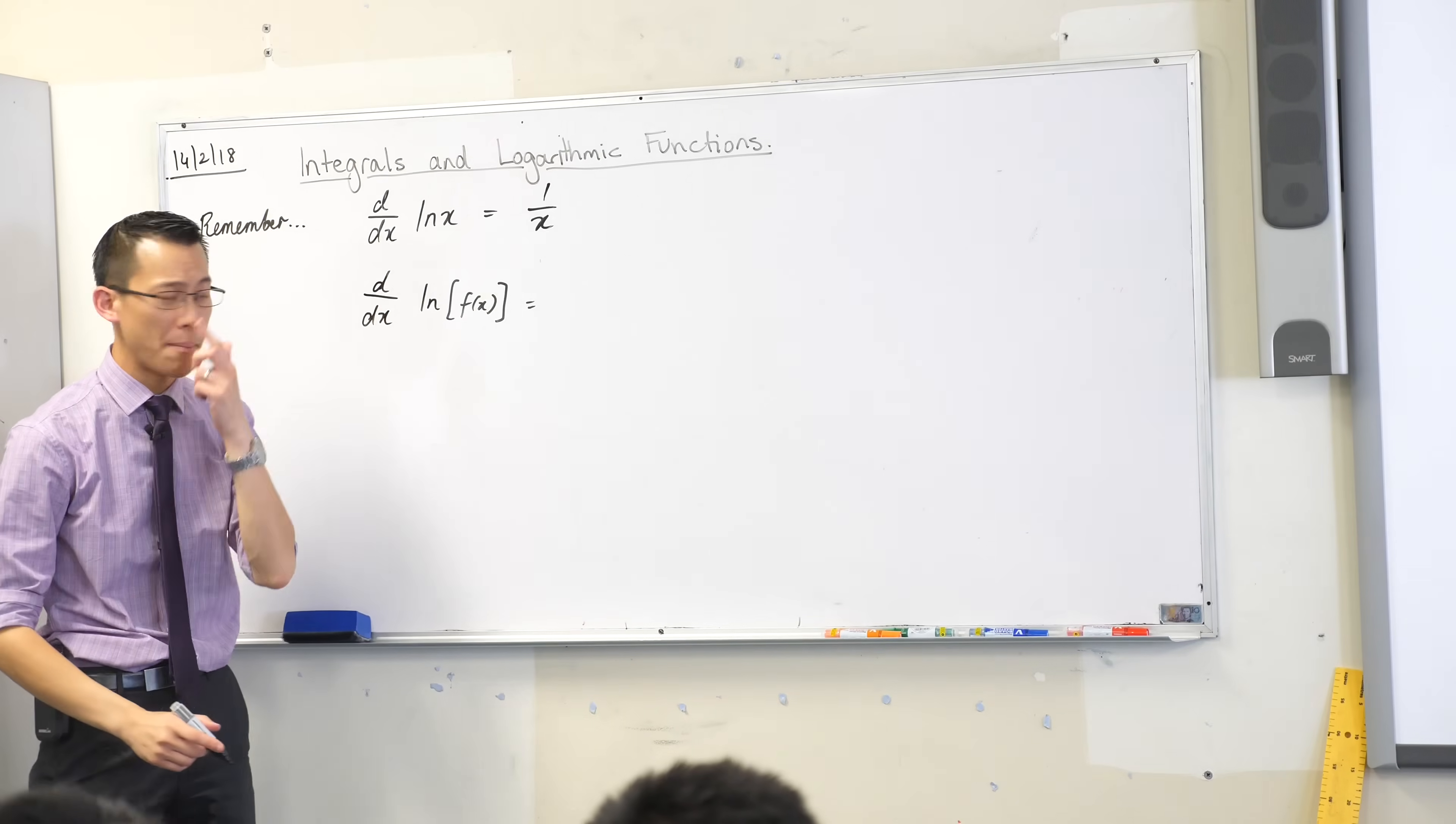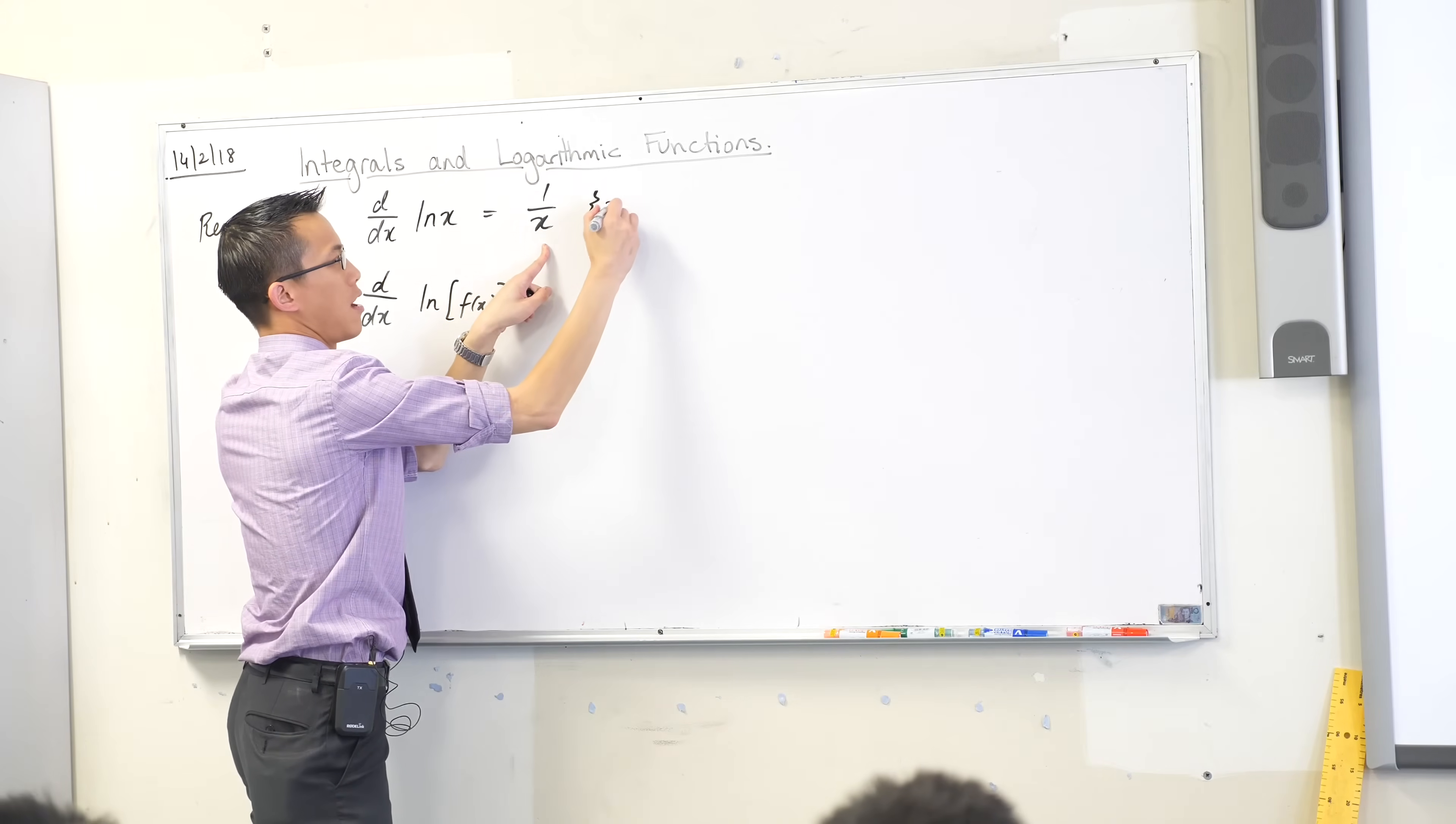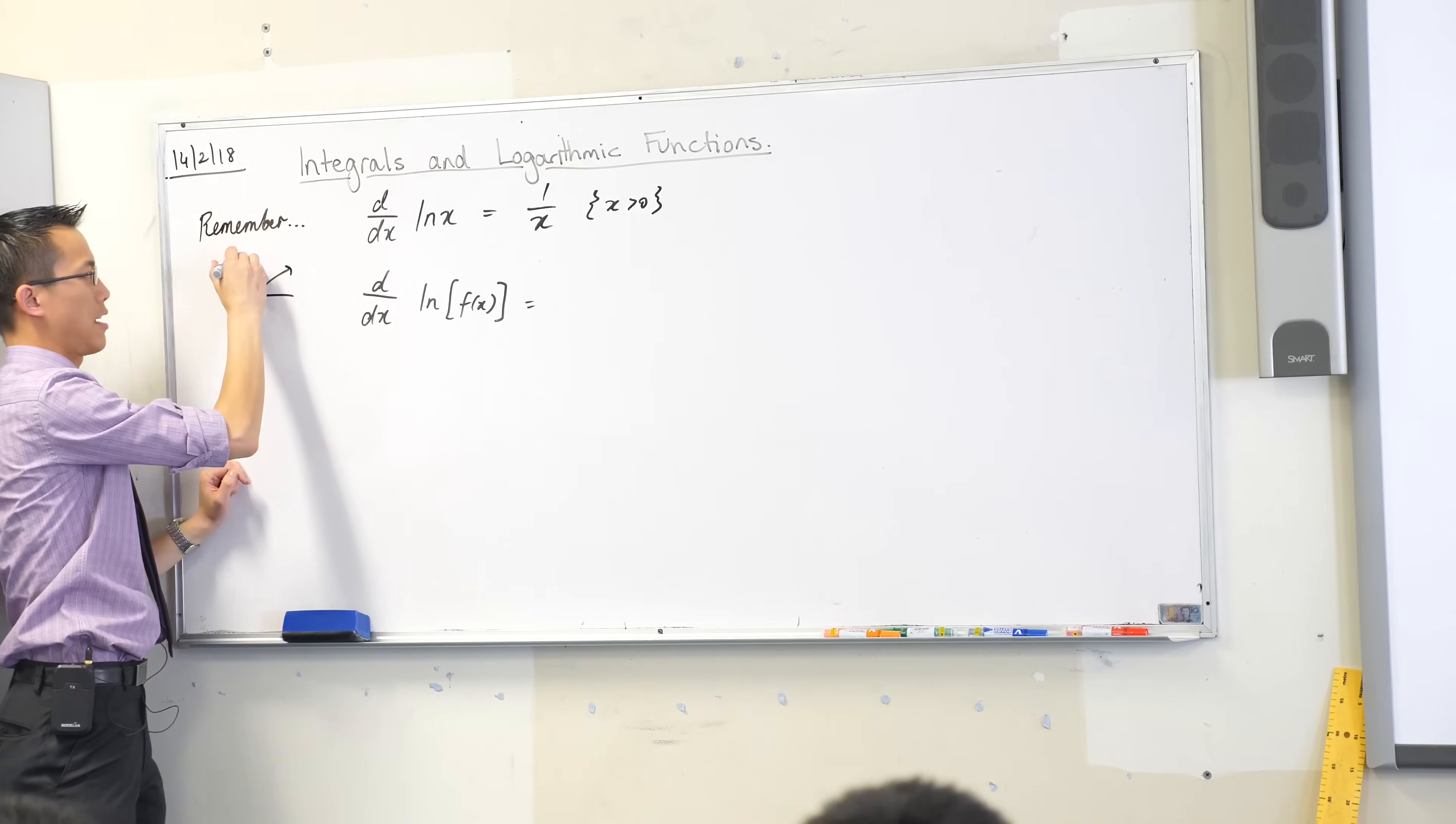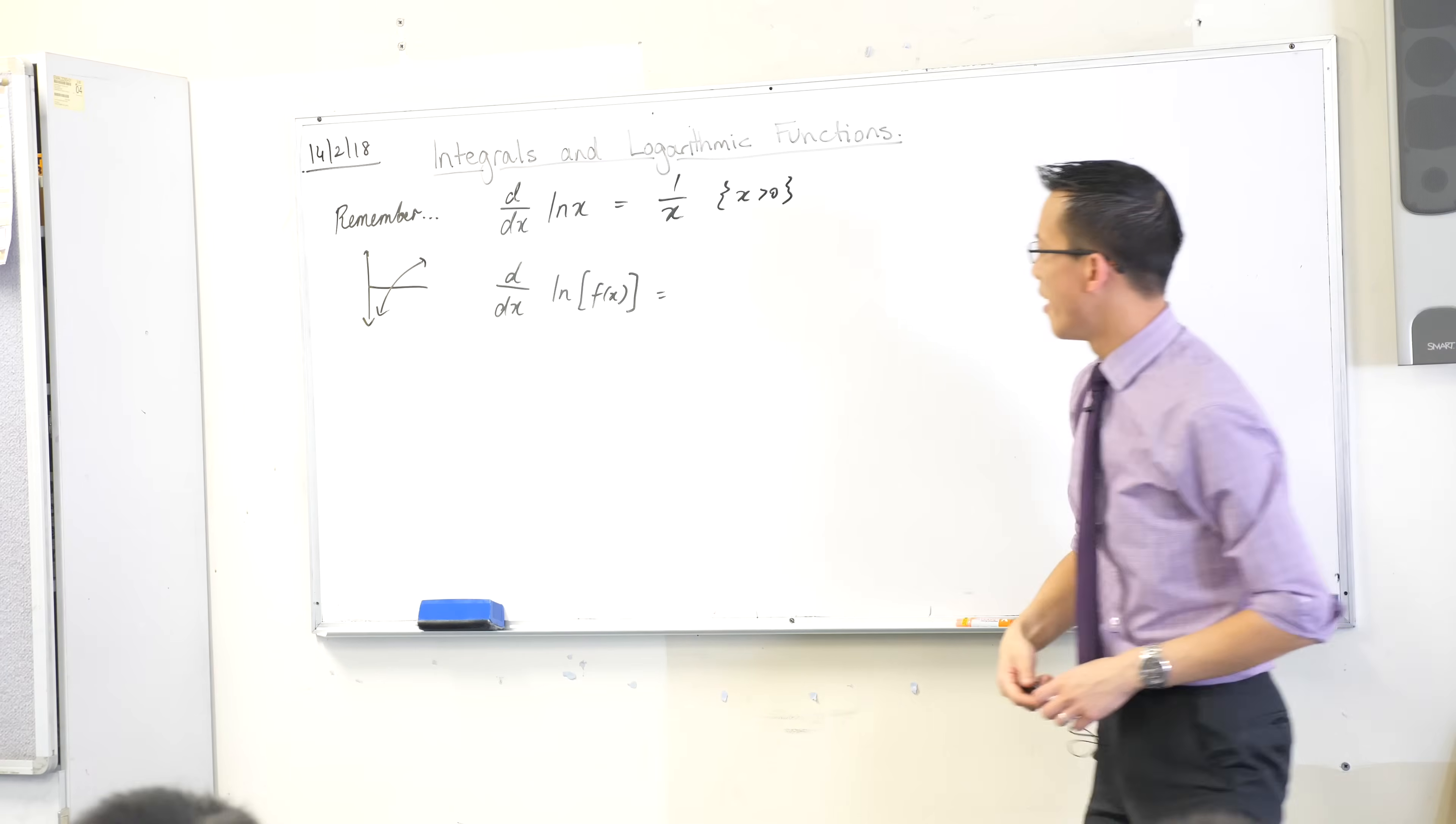Quick note, do you remember, even though it's not that big a deal, but it's still true, there's actually a domain restriction on this 1 over x. Do you remember what it is? It's got to be x is greater than 0. Now, the reason why it's this is because the function you came from, this log x function, you remember what it looks like? It looks like this. There's your regular old log x. It only exists for x is greater than 0. If that's got a domain restriction, then its derivative also has a domain restriction. Does that make sense?